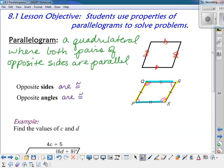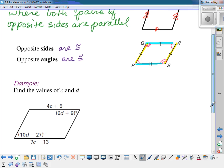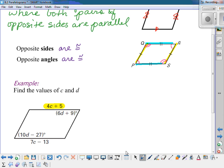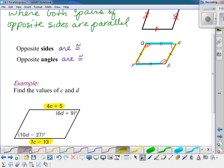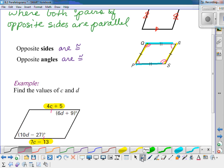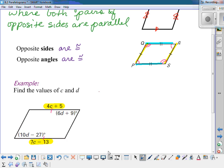So we'll start off with an example here. I'm going to find the values of c and d in this parallelogram. Well, I see that this top side is represented by the expression 4c plus 5 and the bottom side is represented by the expression 7c minus 13. And because it's a parallelogram, I know that those two sides are congruent. So that means that their measures are equal. So 7c minus 13 would have to equal 4c plus 5.